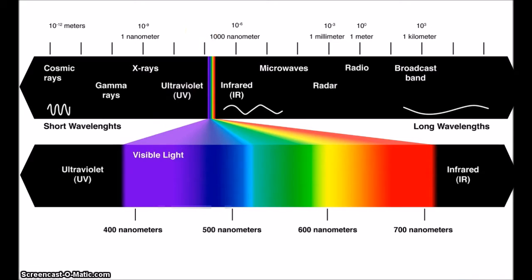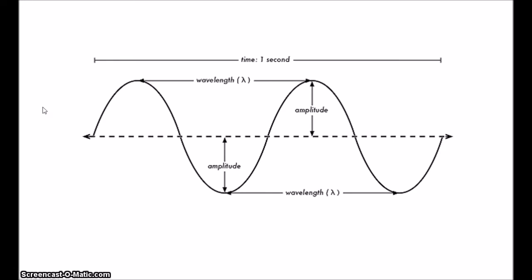Colour perception begins with light. The eye responds to a rather narrow band of electromagnetic radiation between about 400 to 700 nanometres of the spectrum, and this is designated visible light. The important properties for our purposes are wavelength and amplitude. Wavelength is the distance between successive peaks or troughs. We also talk about frequency, which is the number of waves per second. Higher frequency means shorter wavelength.